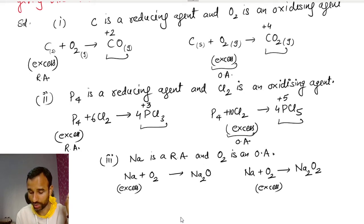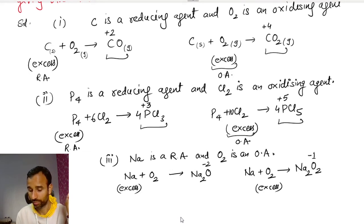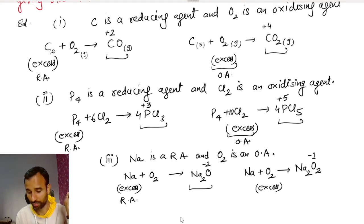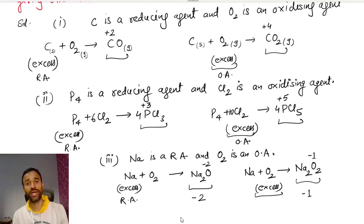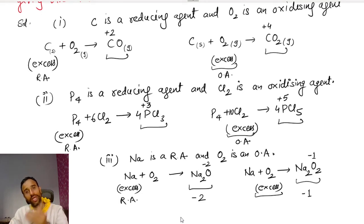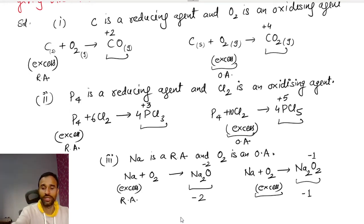In sodium oxide, the oxidation state of oxygen is minus 2. In sodium peroxide, the oxidation state of oxygen is minus 1. Hence we have proved that whenever the reducing agent is in excess, we get a compound having lower oxidation state, and if we have the oxidizing agent in excess, we get a compound with higher oxidation state.